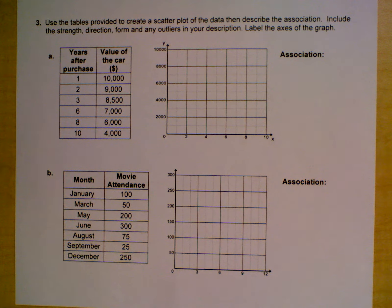Question number three: use the tables provided to create a scatter plot of the data, then describe the association. Include the strength, direction, form, and any outliers in your description. Label the axes of the graph. So first thing we're going to do is plot the points and label the axis. I'm going to pause the video.